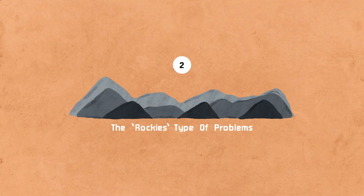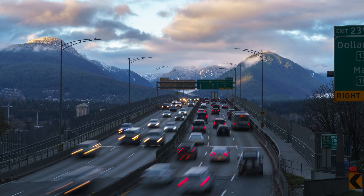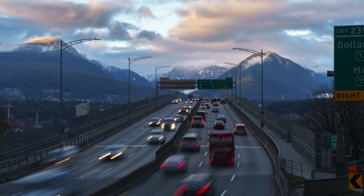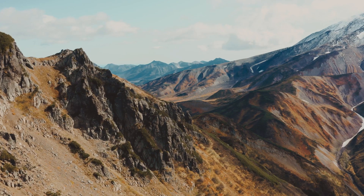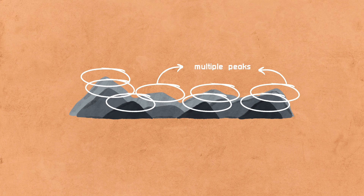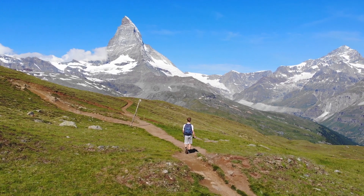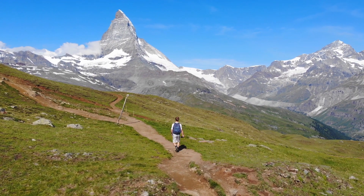Of course, not everyone is on this path. So let's take a look at the second type of problem, which is the Rockies. Let's go to the Pacific Northwest — I'm from Vancouver, so this is close to my heart. But if you're from other places, the Himalayas, the Alps, any places where there is a mountain range with multiple peaks and valleys, then this is problem number two. In this type of problem, there are multiple paths and they all seem to be leading upwards. So which path do you choose?